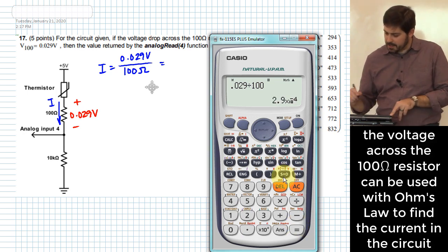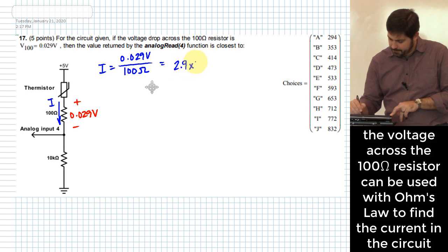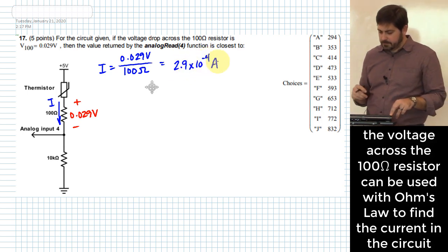Okay, 2.9 times 10 to the minus 4 amps, then what?